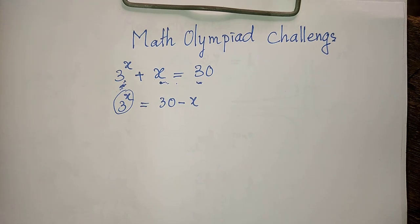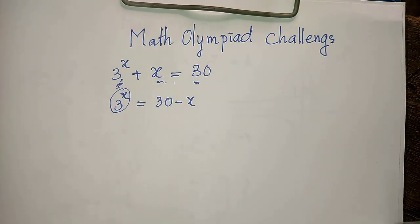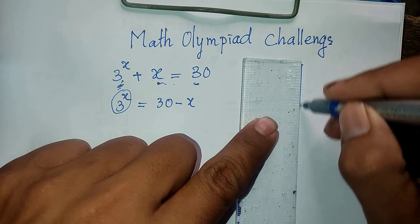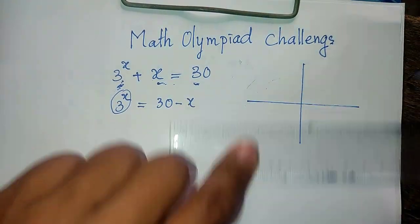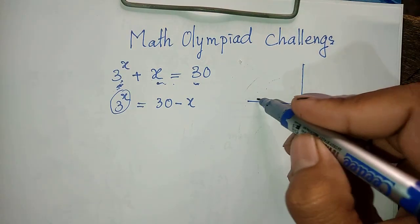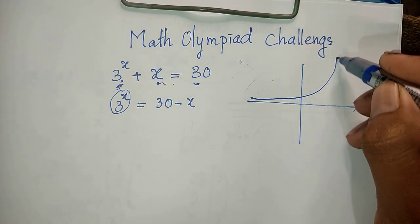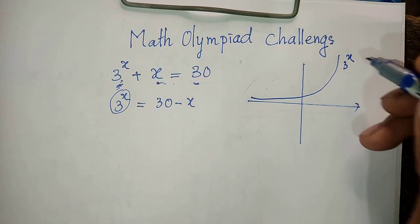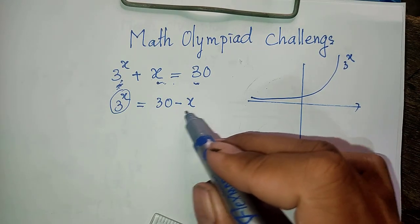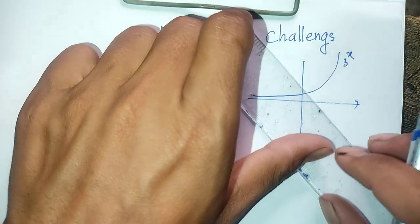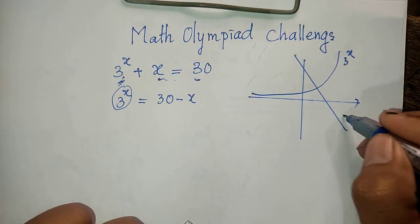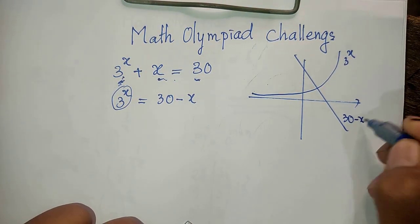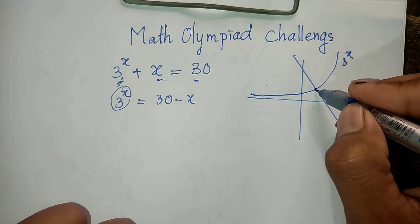And so now this exponential function, we have the graph of this 3^x, and this 30 minus x is also the graphing of this 30 minus x. It has only one solution.